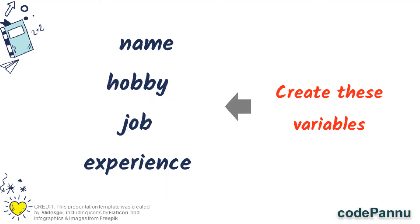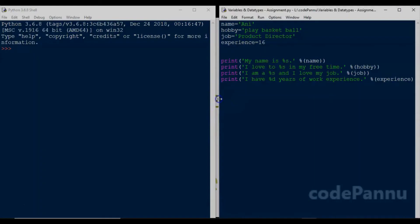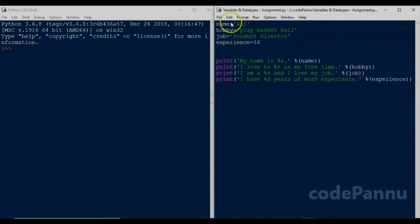I am going to create 4 variables: name, hobby, job, and experience. So I write name is equal to, within single quotes, 'ani', hobby within single quotes 'play basketball', job is equal to 'product director', and finally experience is equal to 16.